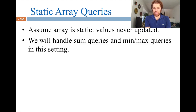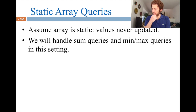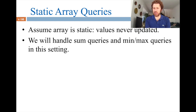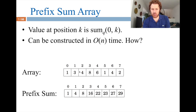Let's begin with the assumption that the given array is static, meaning the values will never be updated. This hints that we can build a data structure that doesn't support update operations but supports queries very efficiently, assuming there won't be any updates.